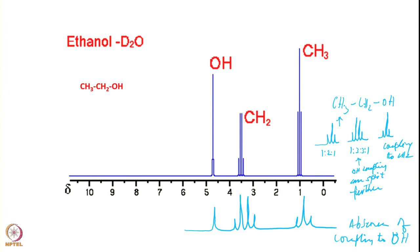In the absence of OH coupling, you get a triplet for CH3, a quartet for CH2, and a single line for OH. The intensity ratio is 3:2:1, because there are 3 protons in CH3, 2 in CH2, and 1 in OH. When you take the integral, it is proportional to the number of protons. The coupling patterns and intensities are thus useful to understand chemical shifts and spectra of molecules.